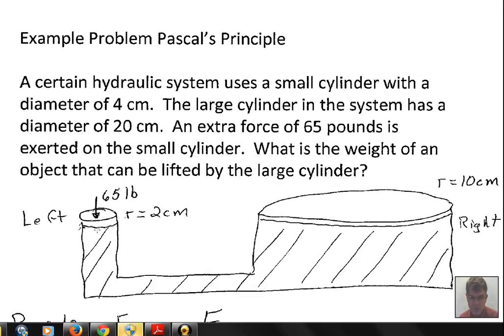That extra pressure will be existing every place in the fluid, and especially of interest to us is what's the extra pressure and result of that pressure underneath this movable piston on the right. We're going to press down on the piston here, the piston on the right side can carry some load upward, so what is the weight of the object over here that can be lifted? 65 pounds of extra pressure here, let's go ahead and see how we proceed.